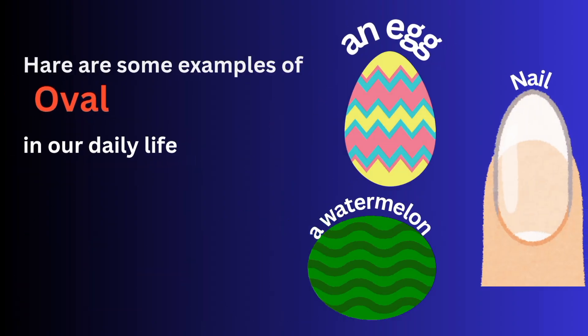This is an oval shape. Here are some examples of ovals in our daily life, like a watermelon. These are oval shapes.